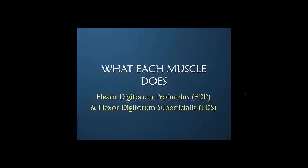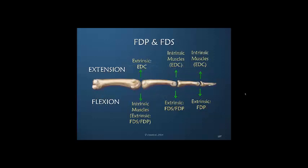Now I want to briefly look at the flexor digitorum profundus and superficialis. These are much more straightforward muscles — we assume they're less complex. Remember, they are the extrinsics that are flexing and they are only secondary at the MP joint. The primary MP joint flexors are extrinsic extensors, but the flexors are intrinsics.